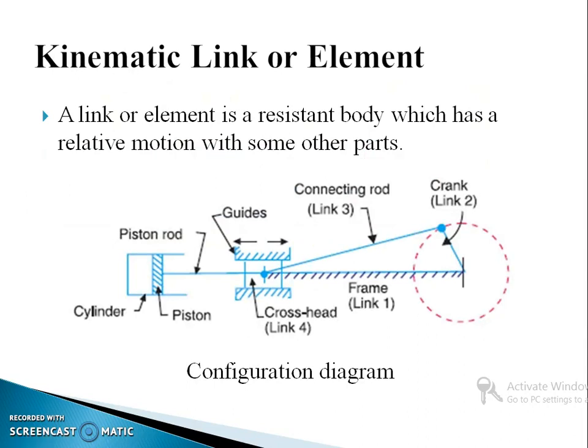Now, we will see what is meant by a kinematic link or element. This is the configuration diagram of the engine which we have seen previously. This represents the crank, this is a connecting rod and this is a piston. All these are separate members but here it is connected together to get the desired motion and the desired work. So, a link or element is a resistant body which has a relative motion with some other parts.